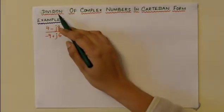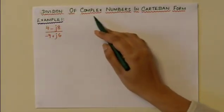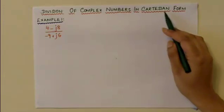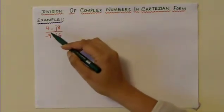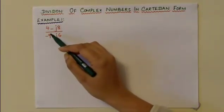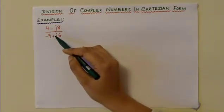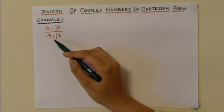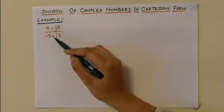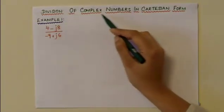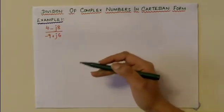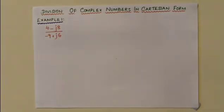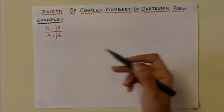This video is about the division of complex numbers in Cartesian form. The example we are going to see is (4 - j8) / (-9 + j6). The division of complex numbers is normally a bit lengthy, but there are a few steps which have to be followed.